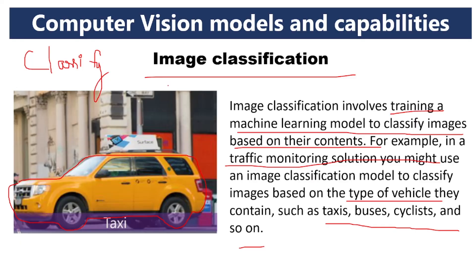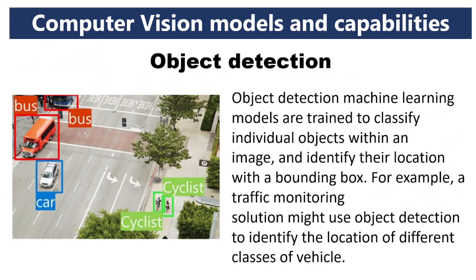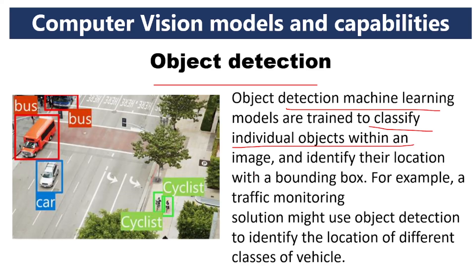Image classification classifies images based on their contents. The second capability is object detection. Object detection machine learning models are trained to classify individual objects within an image and identify their location with a bounding box. The object is identified by placing a bounding box around it automatically.